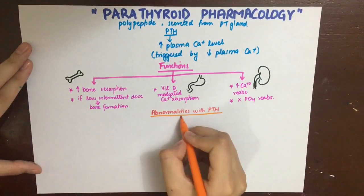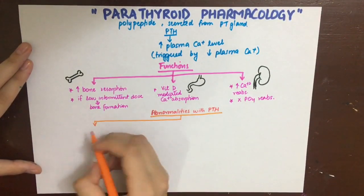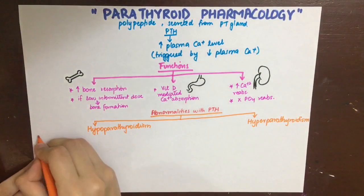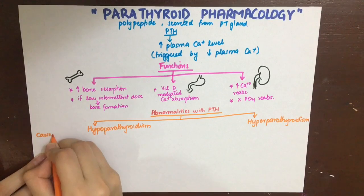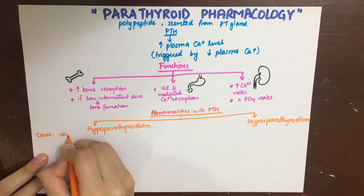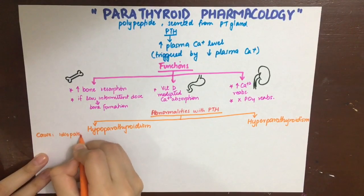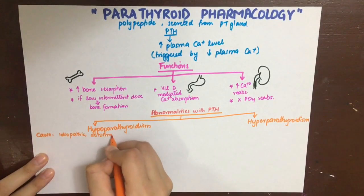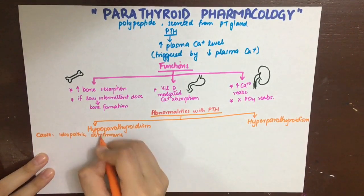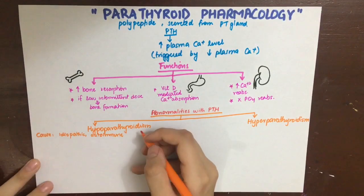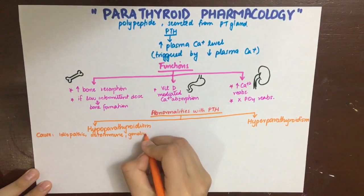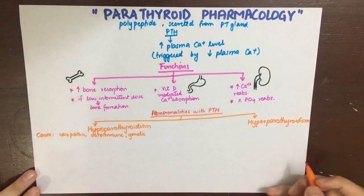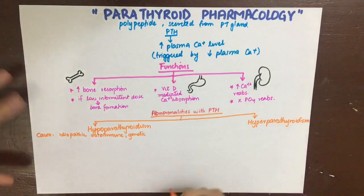There are two sorts of abnormalities with parathyroid hormone: it can be secreted less, which is hypoparathyroidism, or in excess, which is hyperparathyroidism. Hyperparathyroidism can be caused by genetic factors, autoimmune reactions, or can be idiopathic.